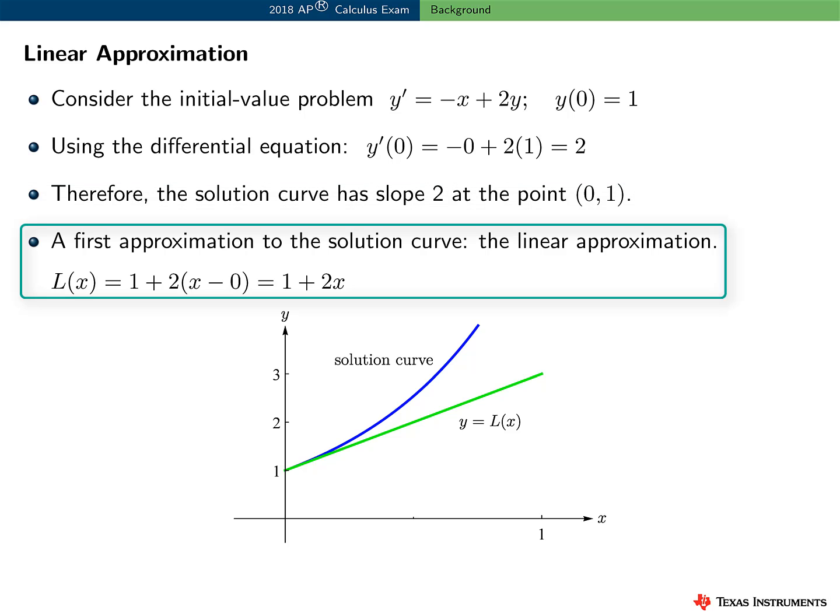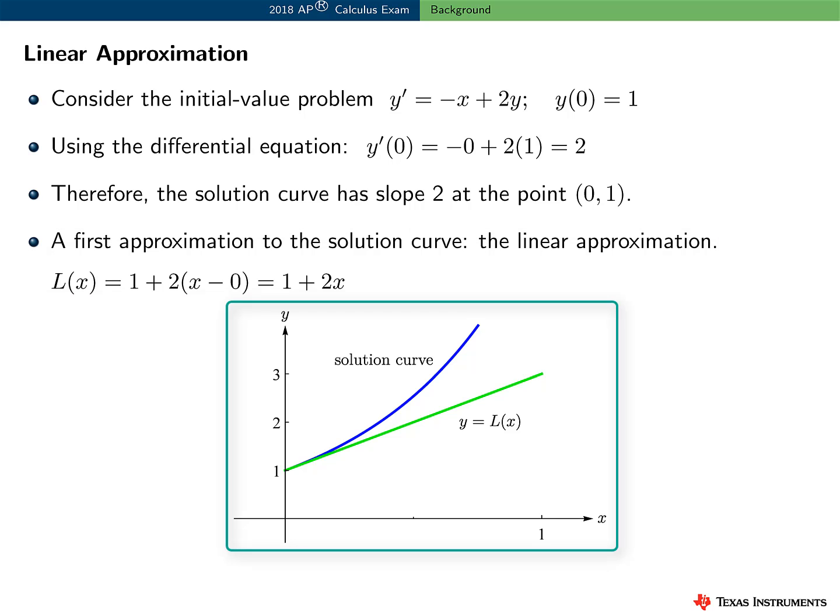As a first approximation to the solution curve, we could use the linear approximation, and I'll call this L. Here, L of x is equal to 1 plus 2x. That is, we could use the tangent line to the graph of the solution curve at the point (0, 1) as a rough approximation to the solution curve. Here's a graph of the solution curve and the first Euler approximation, the tangent line to the solution curve at the point (0, 1).